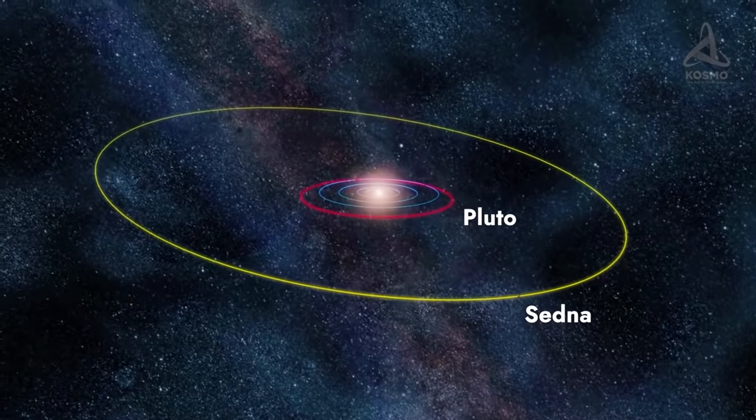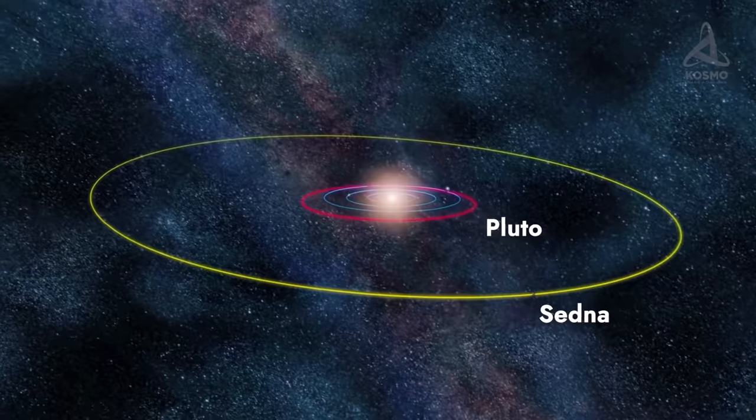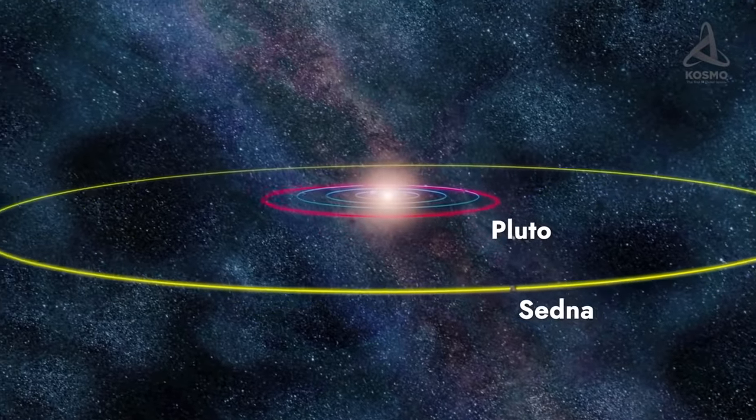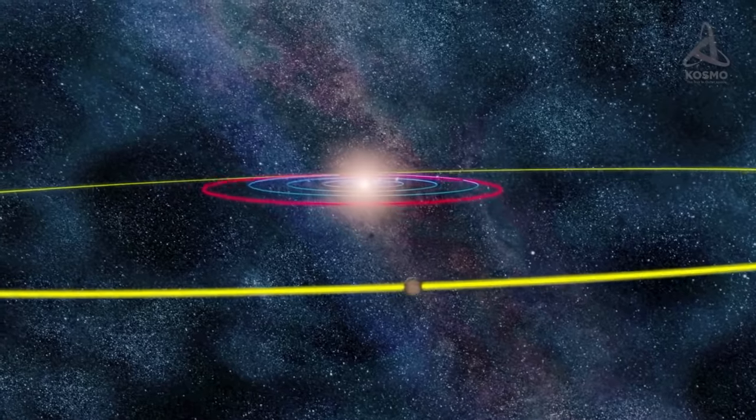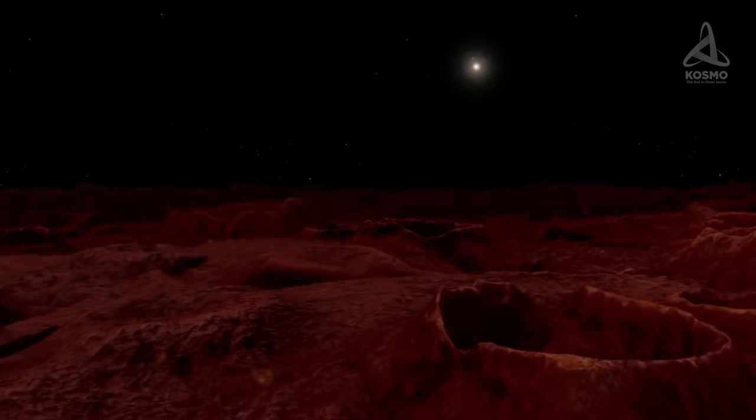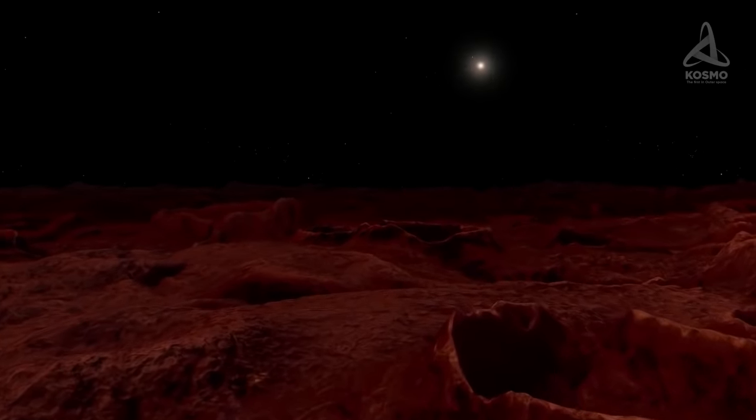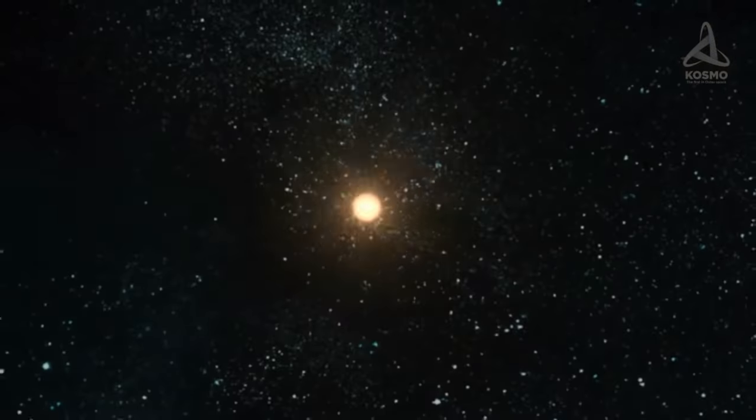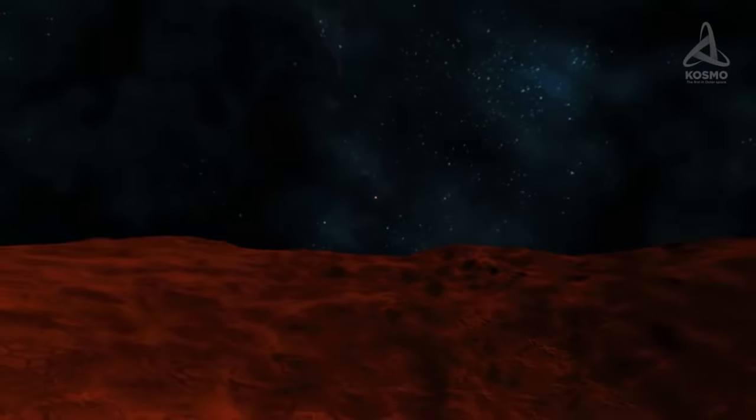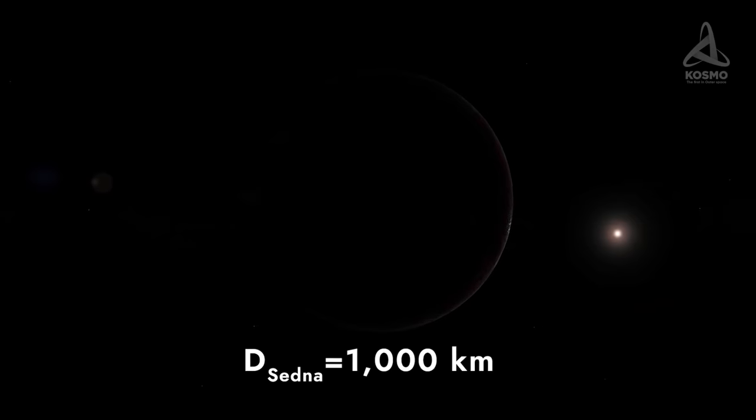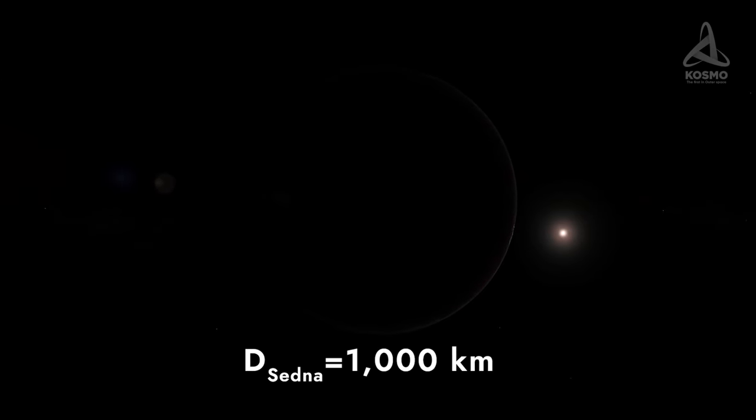This is approximately twice the distance to Pluto. Sedna is now on its way to meet the Sun. It is expected to reach its perihelion around the year 2076. However, the Sun will not be visible as a disk from the dwarf planet's surface even from the closest point of its orbit. When watched from Sedna, our Sun will look like a very bright star, with a luminosity much higher than that of the Moon in our sky. Sedna's diameter is about a thousand kilometers. It is only 40% that of Pluto and slightly smaller than Charon.